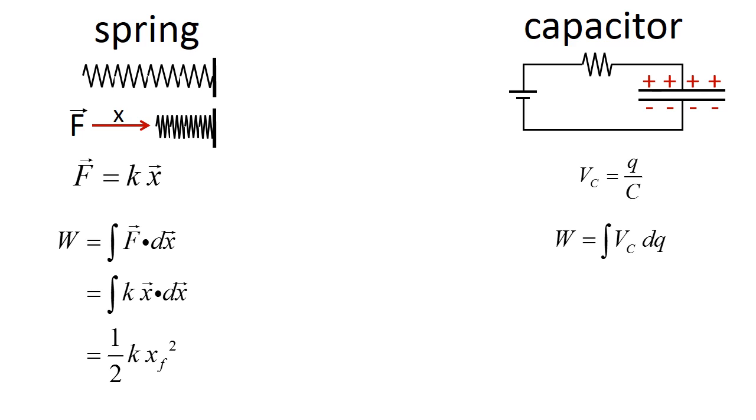The work I've done is the integral of the voltage over the charge moved. The voltage in this case is simply q over c, and if I apply the math, that gives me a total energy stored in the capacitor of one-half, one over c, q squared.